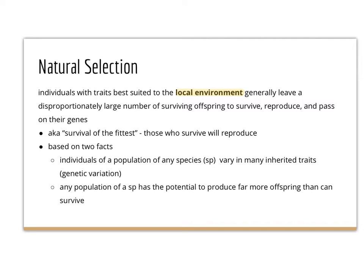Let's break that definition down. "Best suited to the local environment" — this is why in the breeding bunnies activity it was important that we talked about England as the local environment. If that population of bunnies was transplanted to Arizona where it's not cold and rainy, there would be different pressures and the genes would change. But in England, where it's cold, the best suited bunnies are the ones with fur — though that's not true for the entire global population.